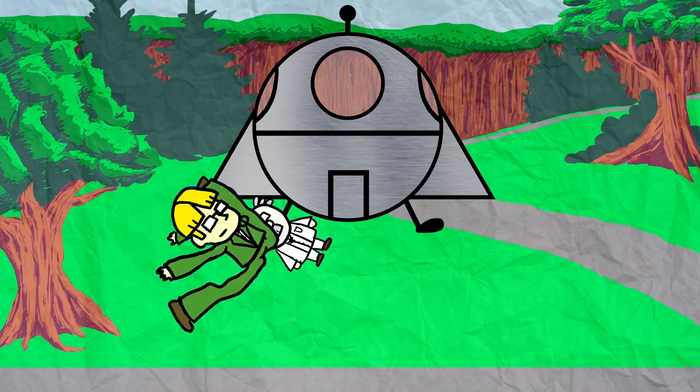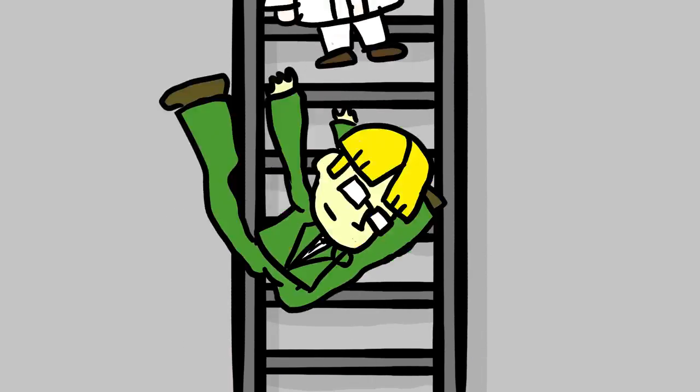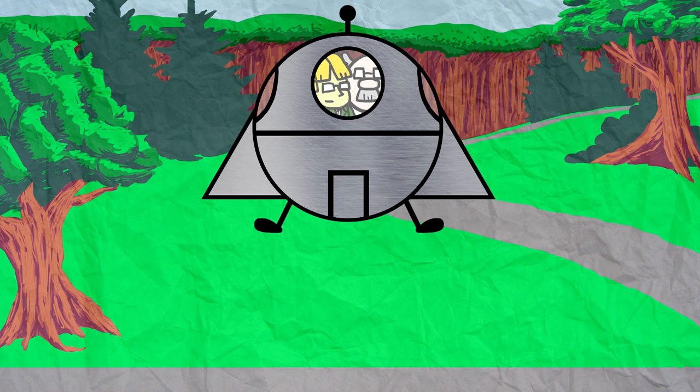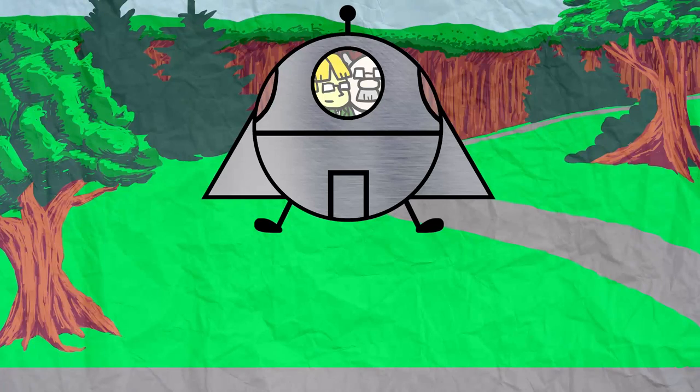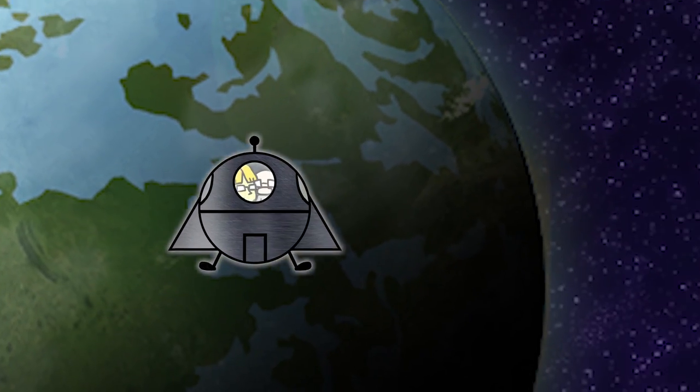They went to the inside of the spaceship and walked up ladders and things to get to the cockpit. The two of them said, three, two, one, go! Spaceship! And the spaceship went up in the air to where space would be.